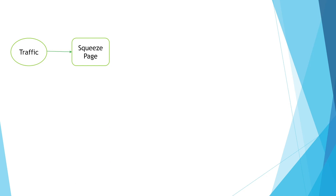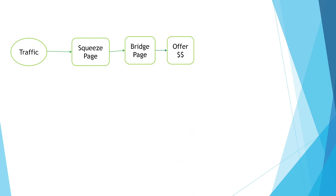Path number one: when the traffic submits their details via the squeeze page, it then moves to the bridge page. The bridge page is also known as a pre-sale page — it is there to summarize the offer that is coming up. When the traffic moves on to the offer, they will read about that offer and decide to buy or not buy. When they decide to buy, they will then move into buyers list C.